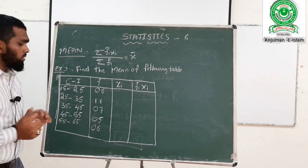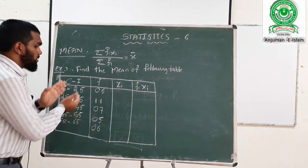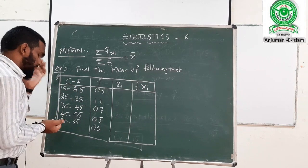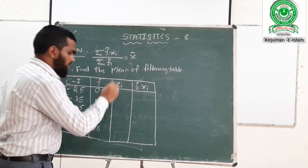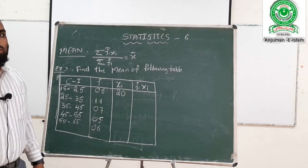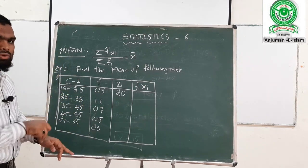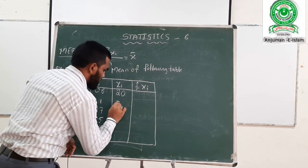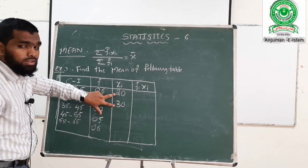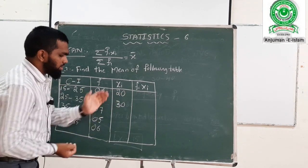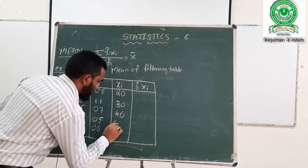Now we need to find Xi, which is the class mark — upper limit plus lower limit divided by 2. For 15 to 25: 25 plus 15 equals 40, divided by 2 gives 20. For 25 to 35: 25 plus 35 equals 60, divided by 2 gives 30. We can observe that these two numbers differ by 10, so we continue with 40, and then 50, and then 60.